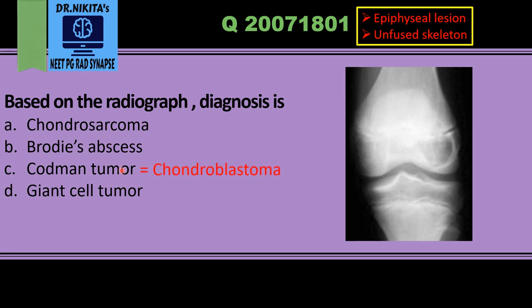Chondroblastoma is also called Codman tumor. Codman tumor was initially the term used for chondroblastoma of the proximal humerus — that is how the term came about, named after the person who first described the signs.